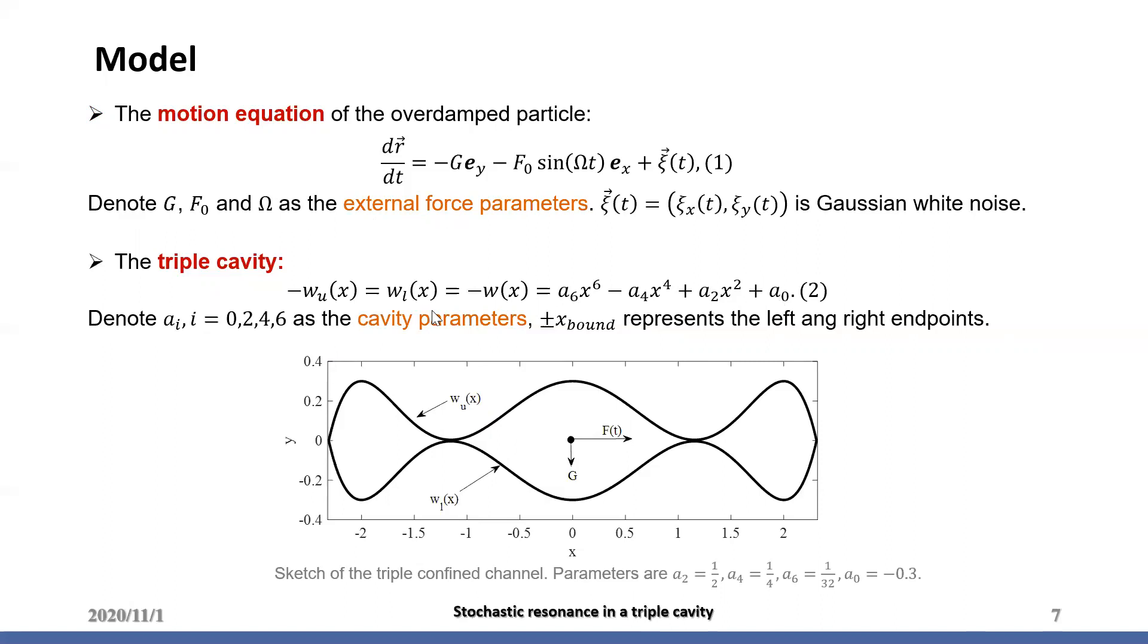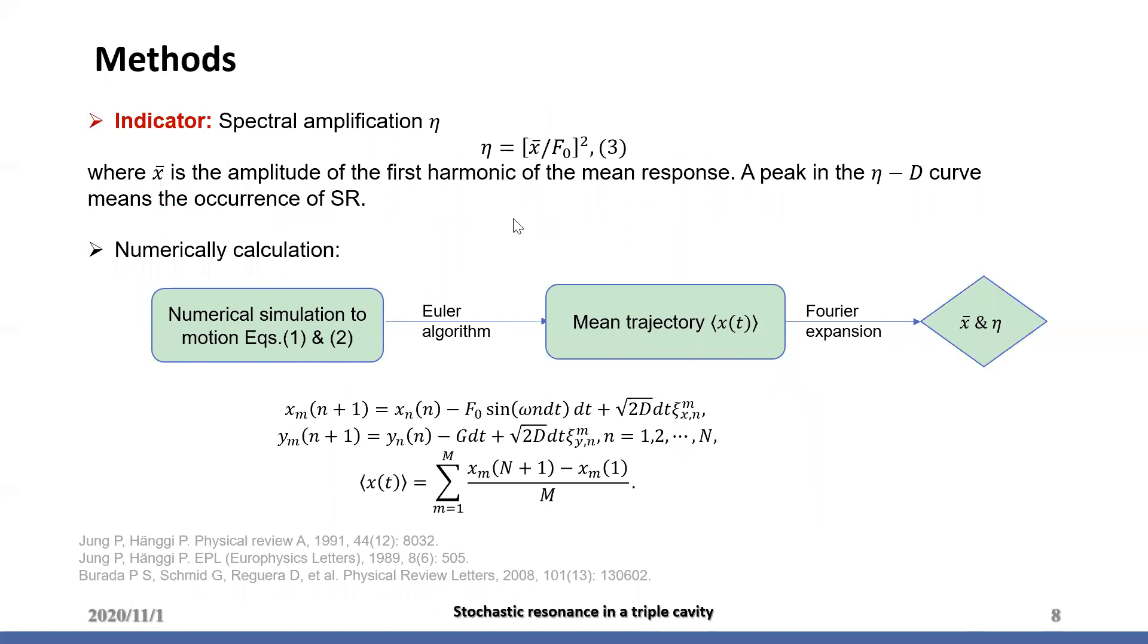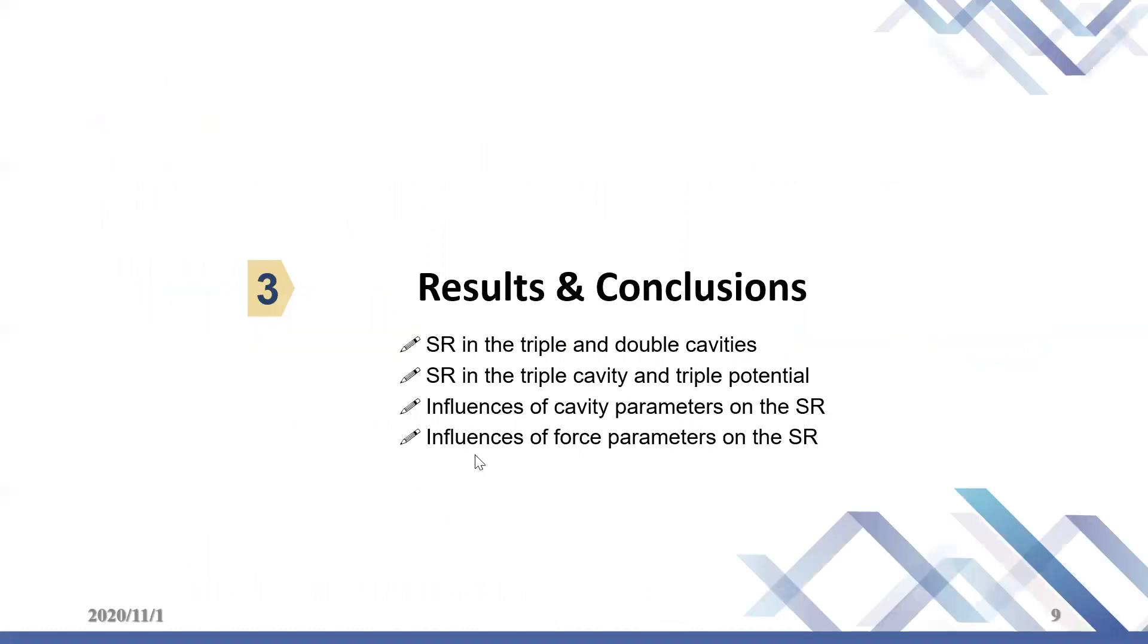Equation 2 and Figure 1 shows the discussed triple cavity with channel parameters Ai. The main indicator to characterize SR is the spectral amplification eta with definition 3. A peak in the eta and d curve means the occurrence of SR. The numerical methods to calculate SR are performed through the OLA algorithm, as shown here. Finally, results and conclusions around the four items are proposed.